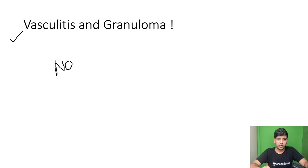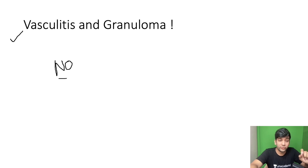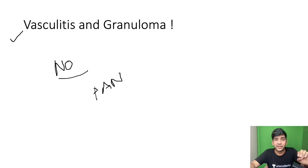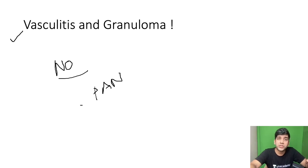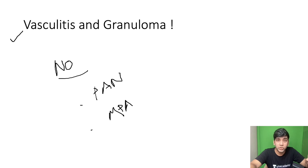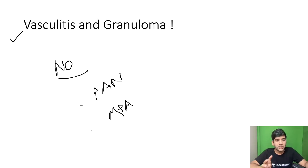There are a few vasculitides to think of when there is no granuloma — these tend to be acute disorders. First is PAN: polyarteritis nodosa doesn't have a granuloma. It's a medium vessel vasculitis without granuloma. Key points: lung spared, renal artery involved, no glomerulonephritis, HBsAg association. The other vasculitis without granulomas is microscopic polyangiitis, also called hypersensitivity angiitis — both mean the same. On microscopy, you see leukocytes and broken WBC debris, so it's also called leukocytoclastic vasculitis.